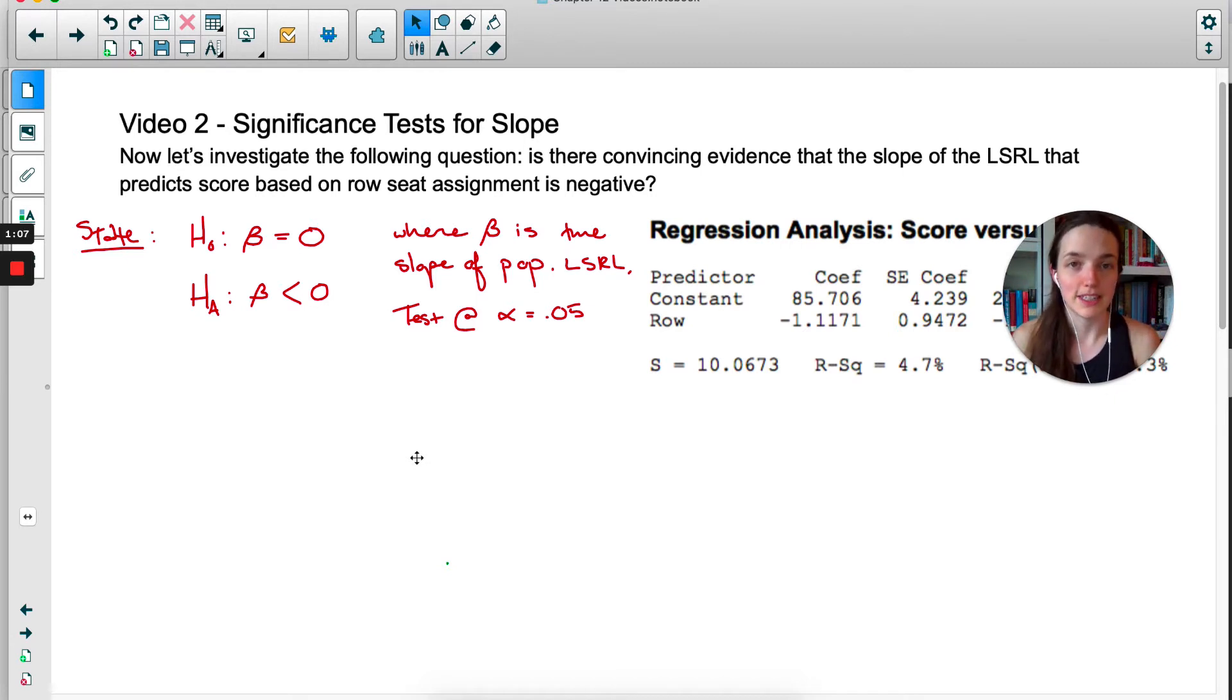We know what b is, lowercase b. It's negative 1.1171. We don't need to do a test about that because we know what it is. We're testing if the population slope is less than zero.